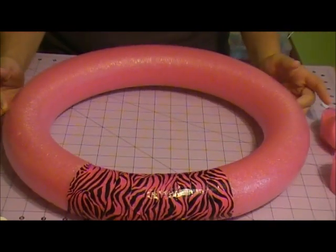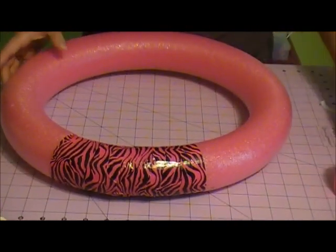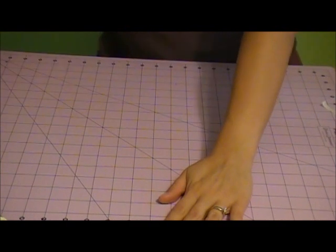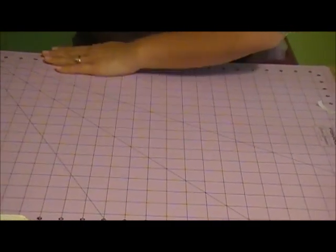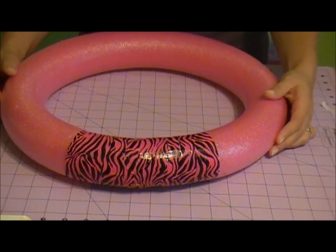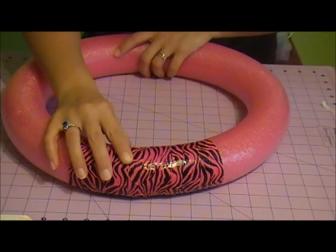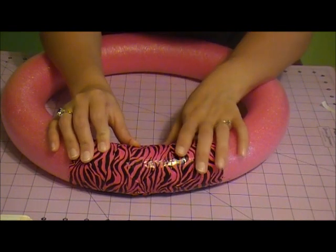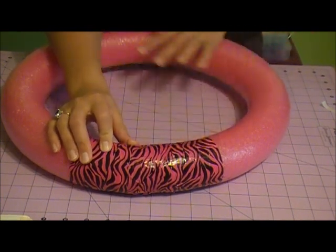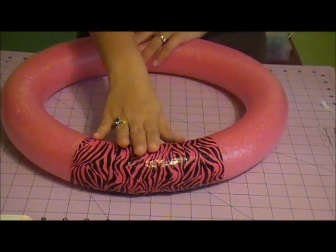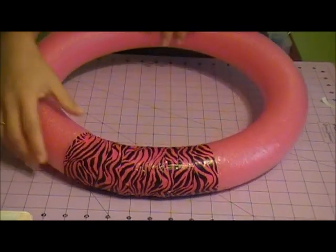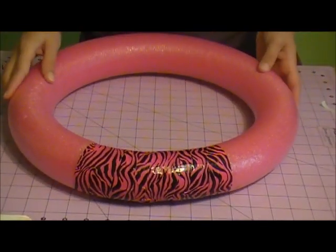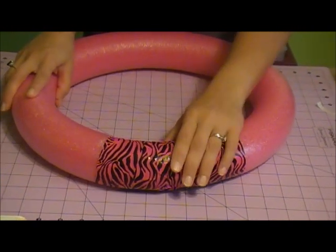My craft mat is 18 inches long ways and this almost goes completely across. So it's about 16 and a half inches in diameter from edge to edge. So that is your wreath form and that's how you make it from a pool noodle.